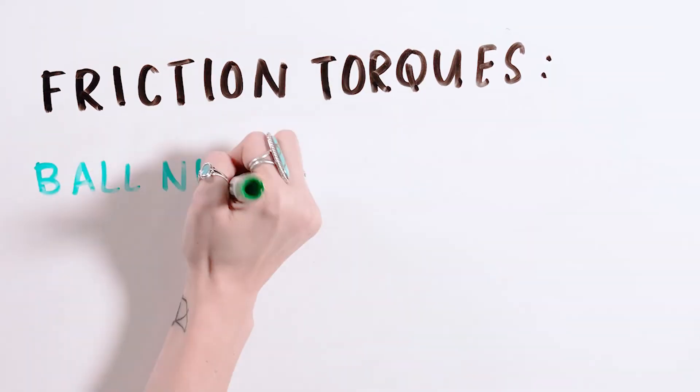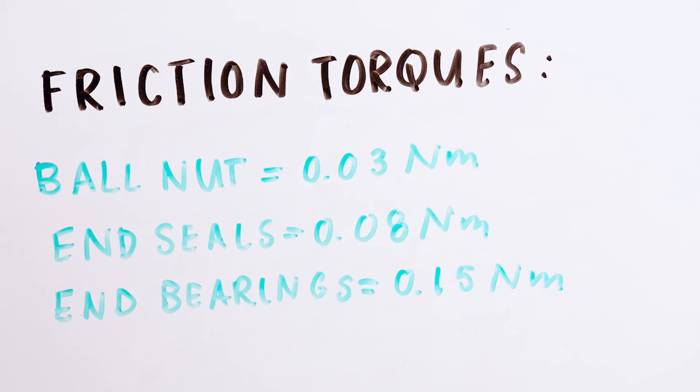Now compare this to the sum of friction torques of the screw assembly. These include the friction torques of the nut, seals, and end bearings. These values can usually be found in the screw manufacturer's catalog.